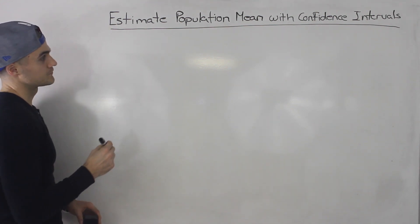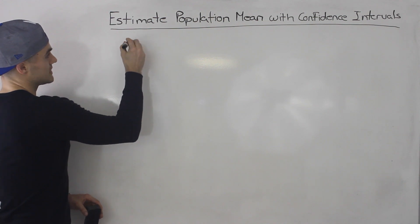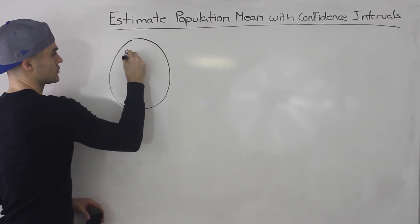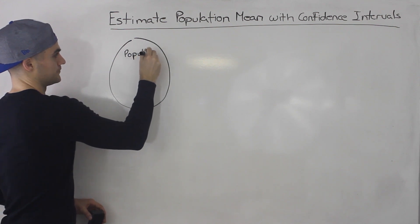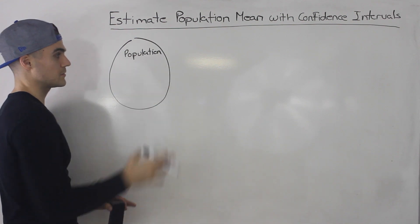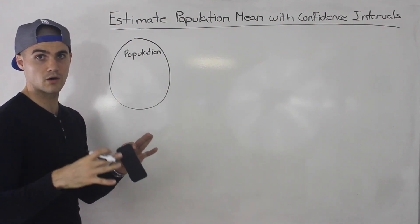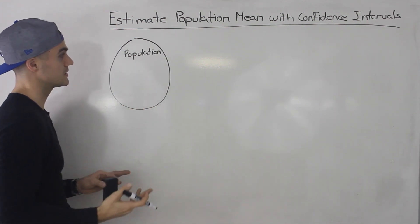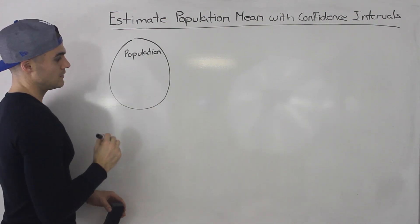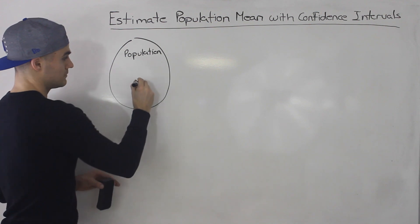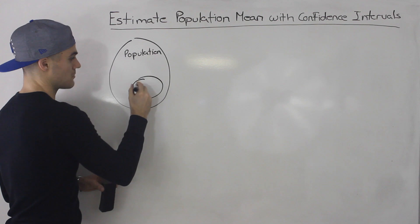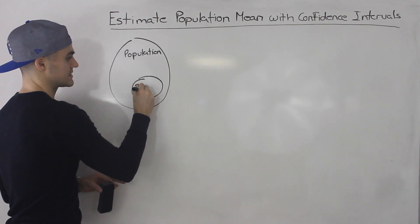What we're going to be doing is taking a population — I'm going to show you visually what's happening first. Some kind of population, could be anything: maybe all of the people in the world, all the people in a certain country, in a certain city — whatever it is, just a certain population. And then we're going to be taking a subset of that population, a smaller piece, a sample.